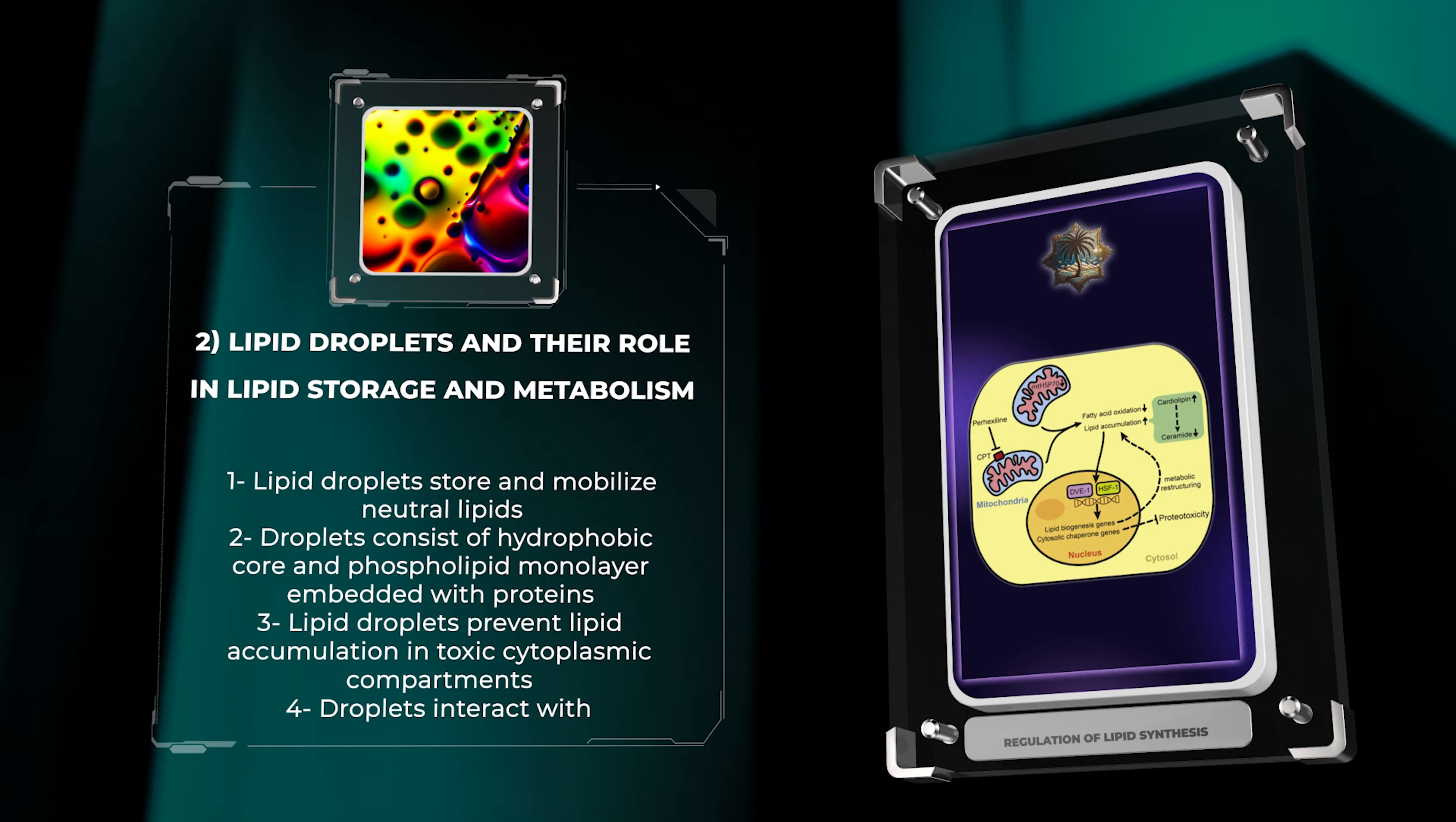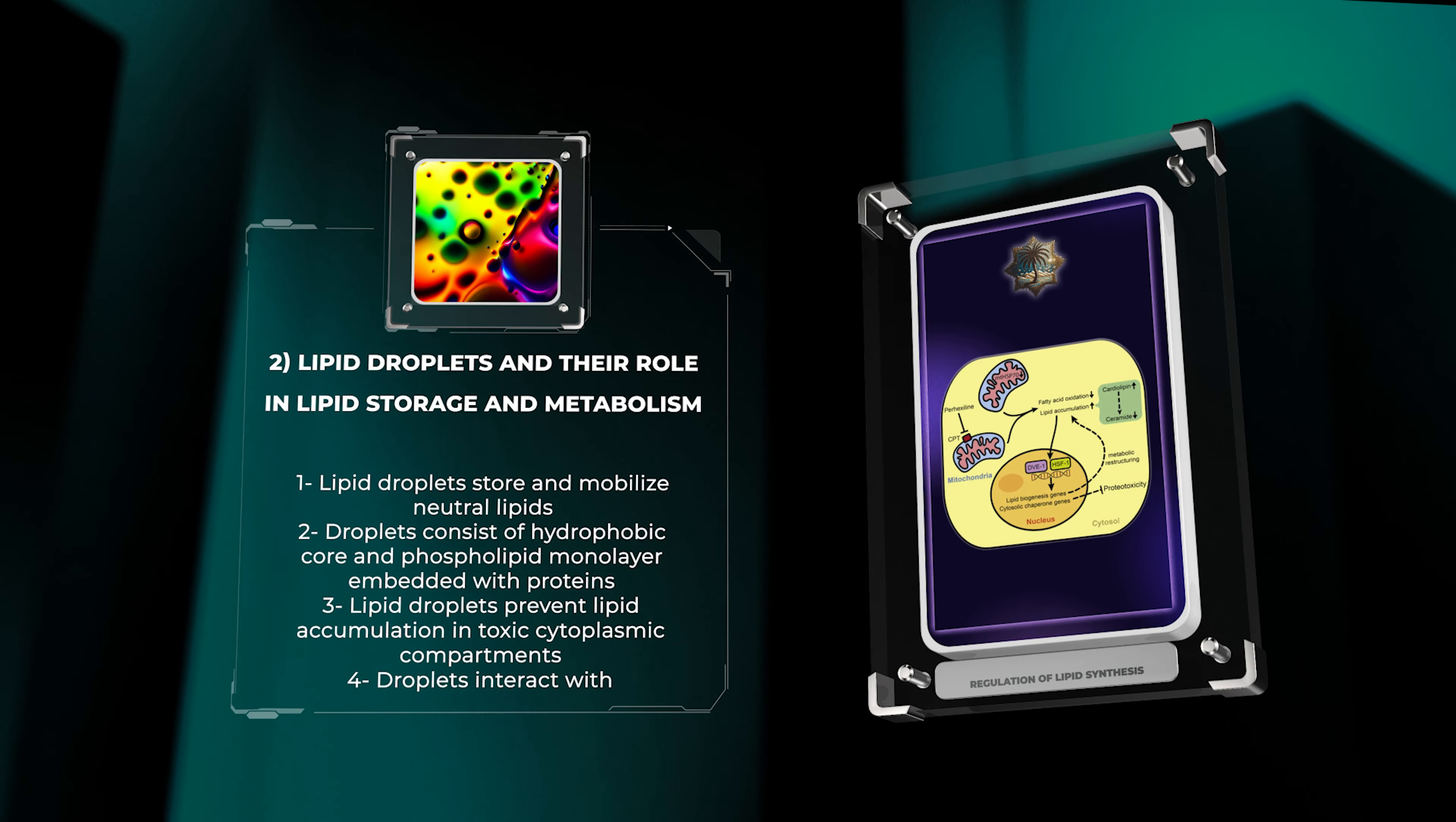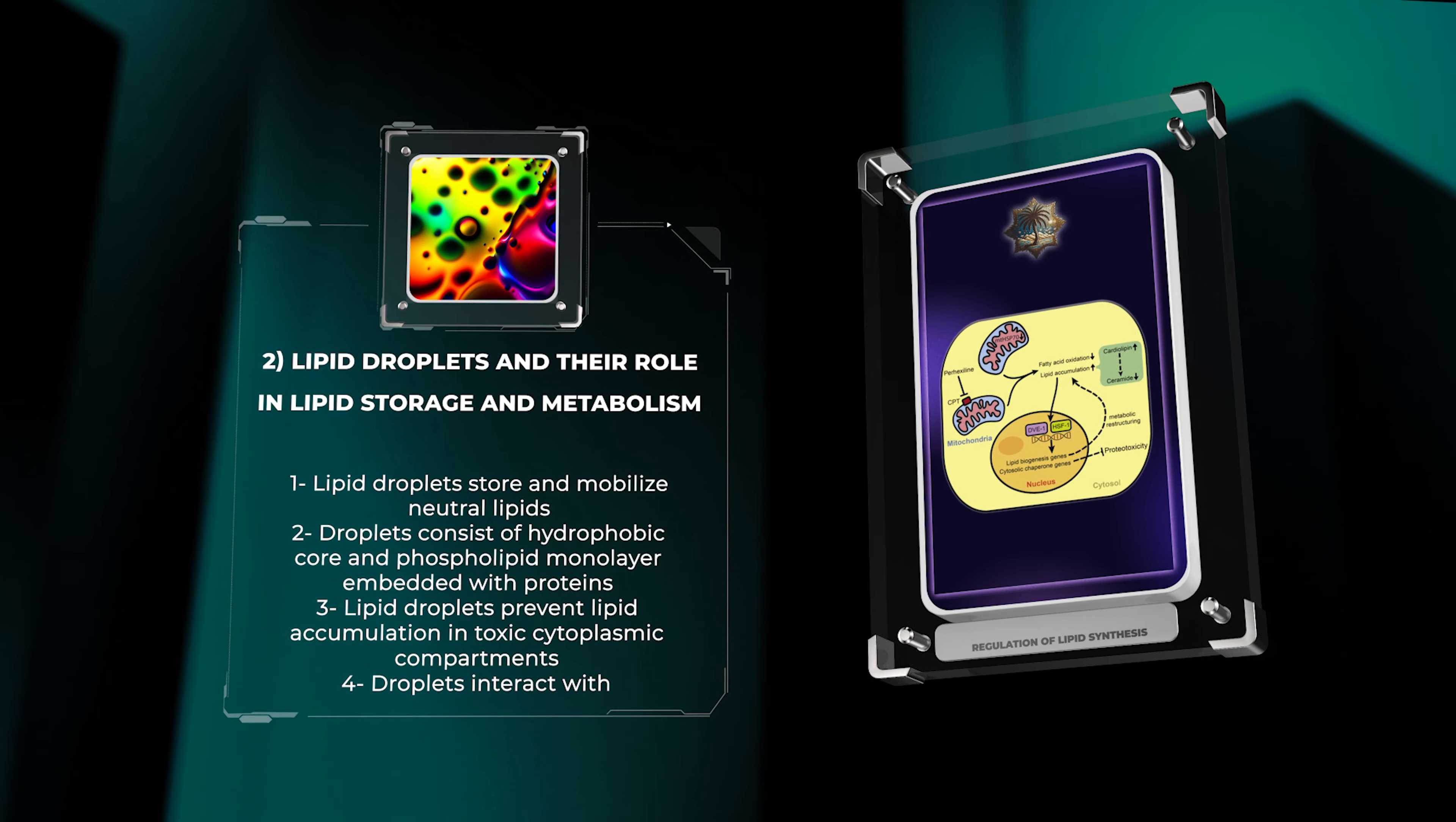Lipid droplets sequester excess lipids and prevent their accumulation in toxic compartments in the cytoplasm. Moreover, these organelles actively participate in lipid metabolism by interacting with other cellular components, such as mitochondria, peroxisomes, and the endoplasmic reticulum.